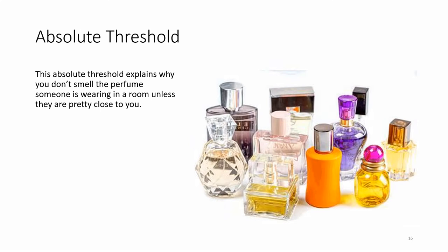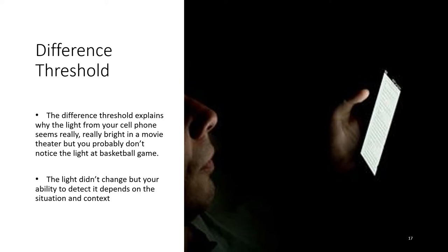Sometimes we're more interested in how much difference in stimuli is required to detect a difference between them. This is known as the just noticeable difference, or JND, also called the difference threshold. Unlike absolute threshold, the difference threshold changes depending on stimulus intensity. For example, in a dark movie theater, a lit cell phone screen would be noticed by many. But in a brightly lit arena during a basketball game, very few people would notice. The cell phone brightness doesn't change, but its detectability varies dramatically between contexts. Ernst Weber proposed this theory of the difference threshold in the 1830s, and it's become known as Weber's Law — the difference threshold is a constant fraction of the original stimulus.